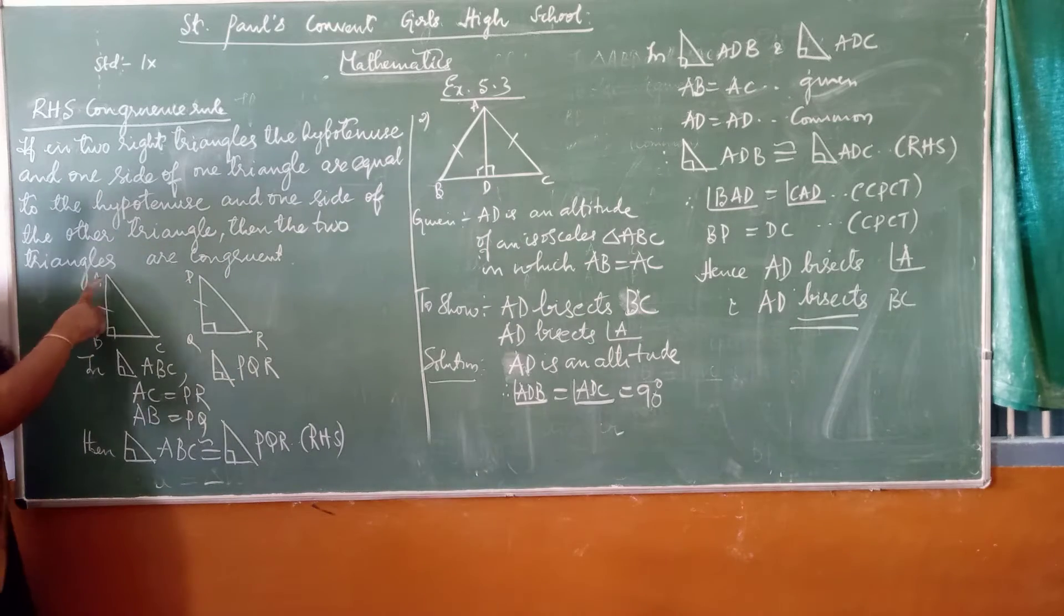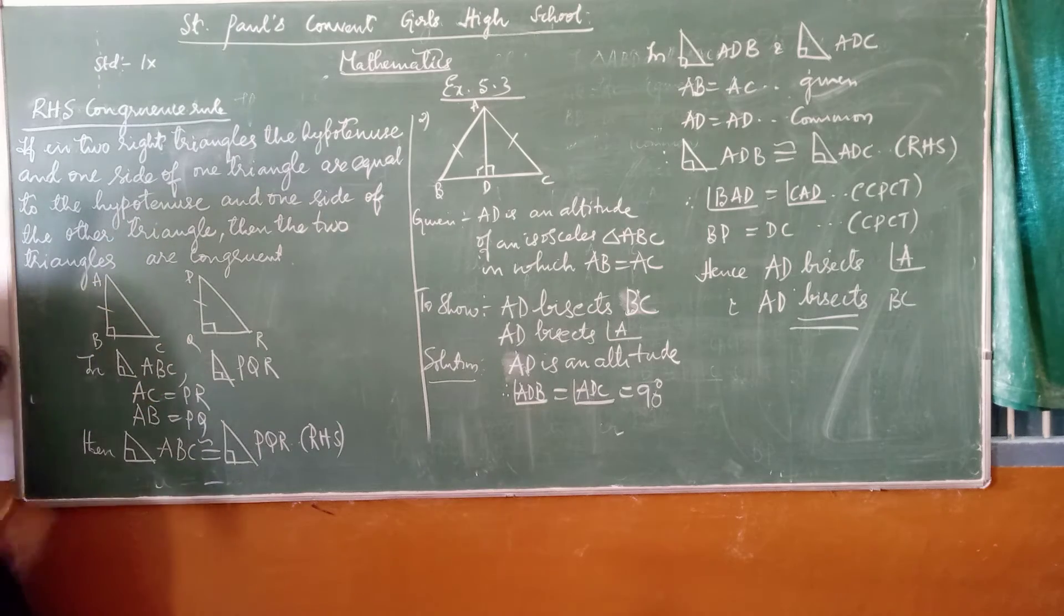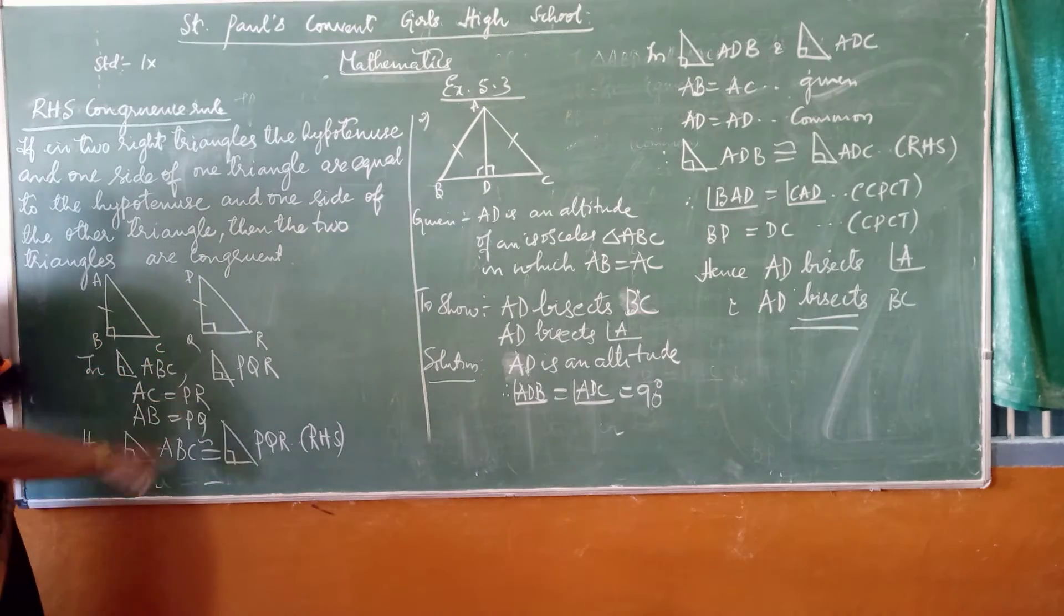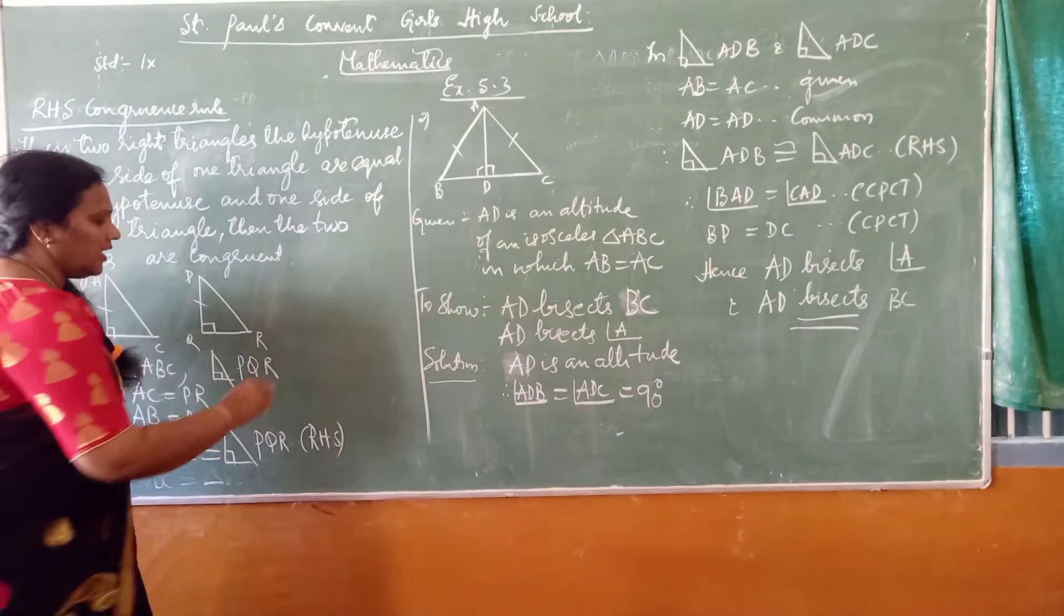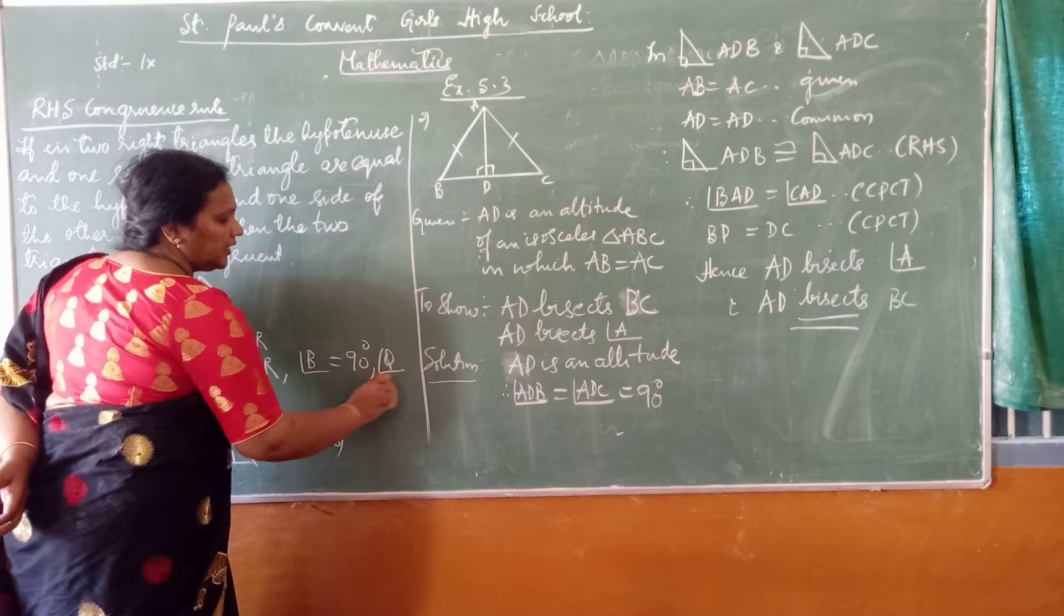See here, there are two right angle triangles. Triangle ABC and triangle PQR are both right angle triangles. Because angle B and angle Q is equal to how much? 90 degrees. Angle B is equal to 90 degrees as well as angle Q is equal to 90 degrees.